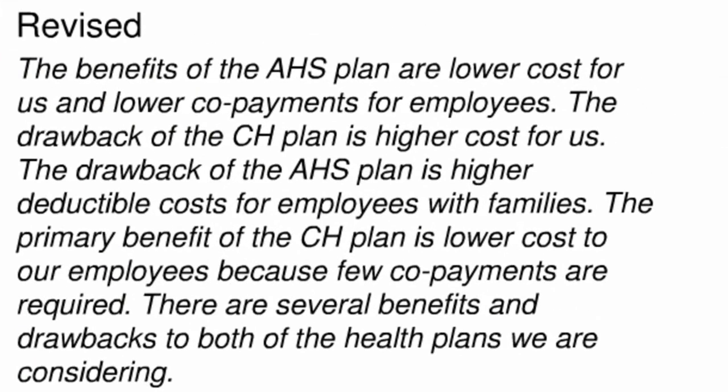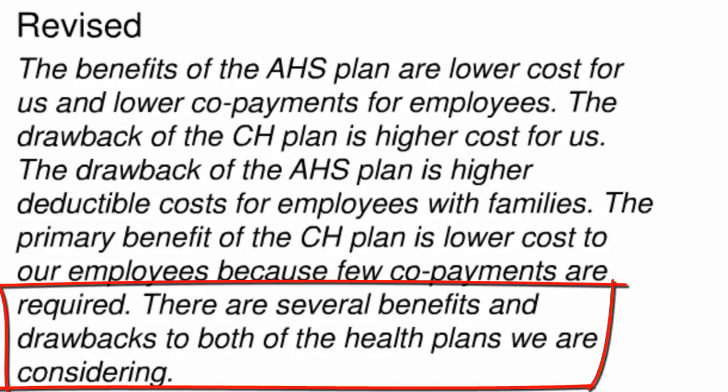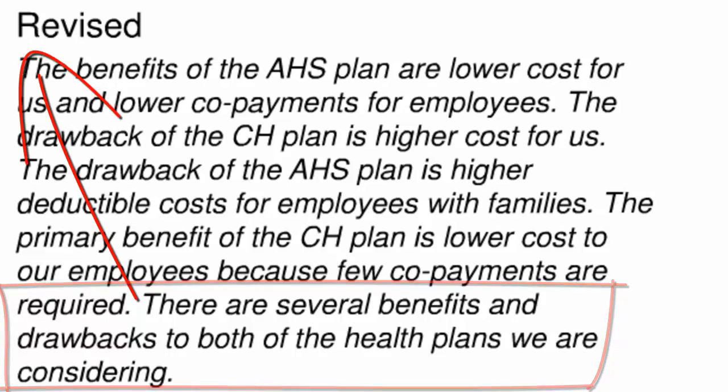In this revised version of the paragraph we've been considering, the writer has improved its effectiveness by providing an explicit controlling idea. However, the writer has not gone far enough, because the reader has to get all the way to the end of the paragraph to learn the writer's intended point. To create an efficient message, the writer needs to place that controlling idea before the details that support it — that means moving the sentence with the controlling idea to the beginning of the paragraph.